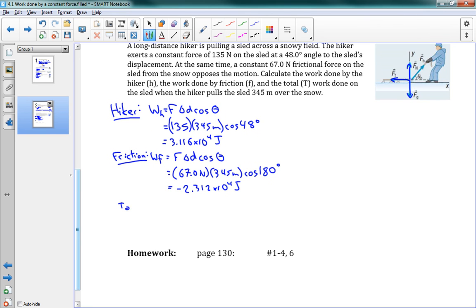And now if I want to do my total, all I need to do is add up the work. The total work is equal to the hiker plus friction. We get 3.116 minus, I guess it's minus here because we have a negative work, minus 2.312 times 10 to the 4 joules. And that gives us a value of 8.04 times 10 to the 3 joules. Or you could call that 8.04 kilojoules. Great!